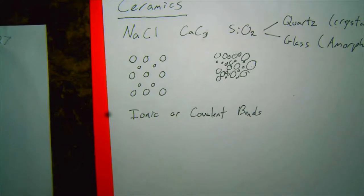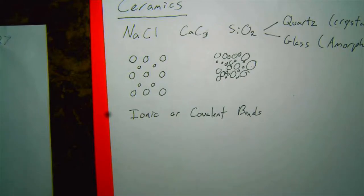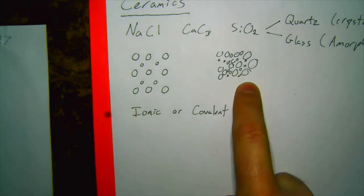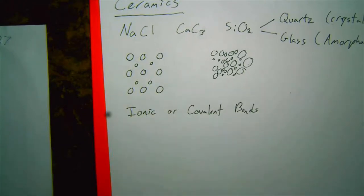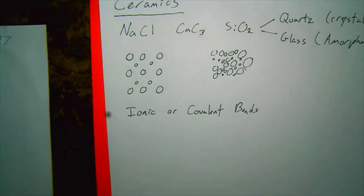Student question: is amorphous structure generally weaker than crystalline? It depends. For a brittle material like a ceramic, generally the crystalline structure will be stronger, as long as there are no other defects. A perfect single crystal will be stronger than an amorphous material, but any crack or void or defect will drastically weaken a brittle material, whereas defects won't have the same effect on a metal. So it can be stronger or weaker, depending on defects and vacancies.